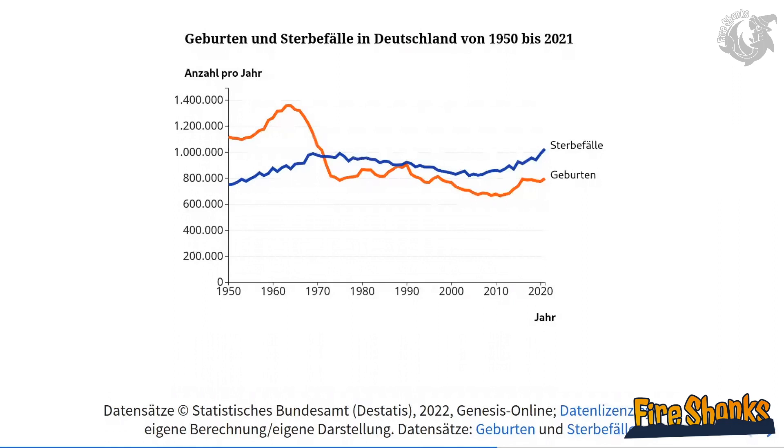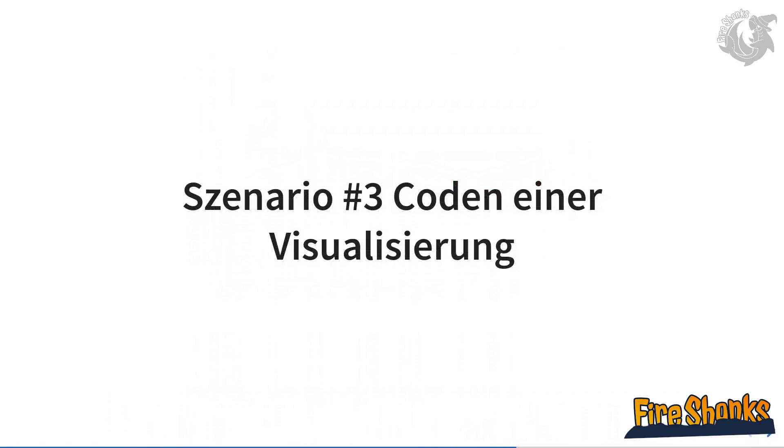I've added a fourth version with a title — the number of deaths and births — and I've labeled the x and y-axes with the year and the number per year. This is an additional step we should take into account when making visualizations: we should include labels and we should include titles. Those were my tips for design.